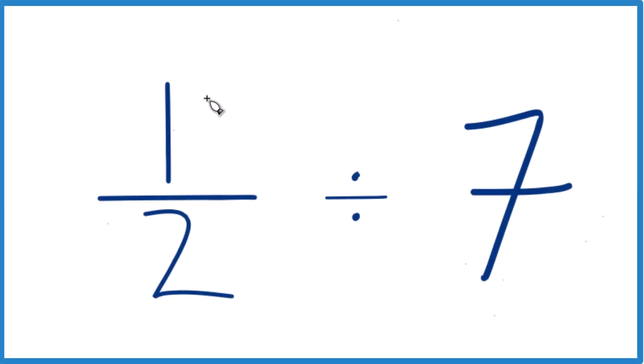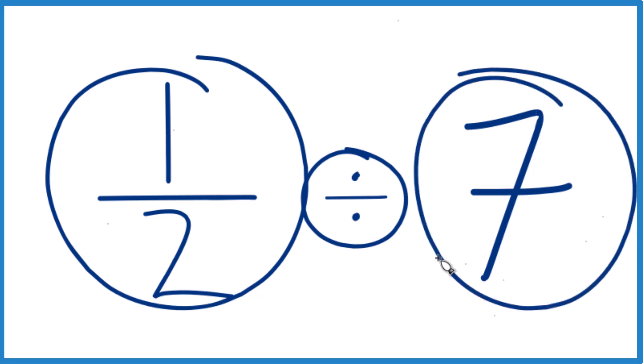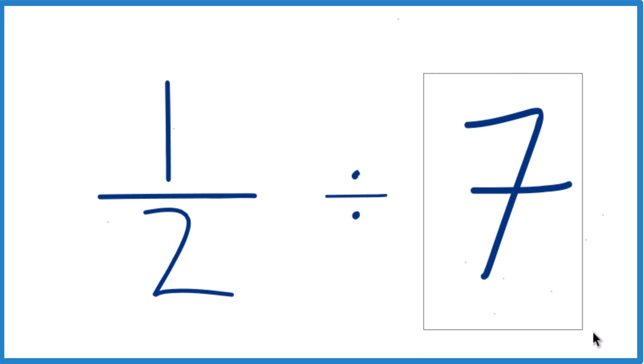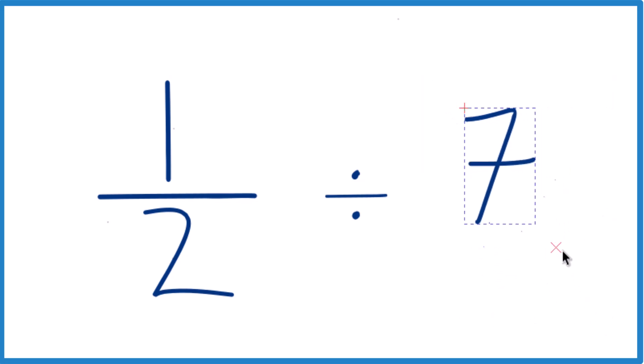In this video we're going to figure out what you get when you take 1 half divided by 7. So probably the first thing to do to make this a little easier is to take the 7 here and call it 7 over 1.